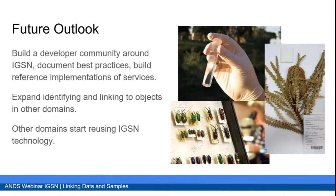What's happening next? At the symposium last week we saw we've already made good progress building a developer community around IGSN, but that needs to carry on further. We document best practices to show how it can be used and build reference implementations of services that others can test their services against. The next steps we are already taking is expanding to identifying and linking objects in other domains, not only in the geosciences. Ultimately, what we want to see is other domains start reusing the IGSN technology — perhaps not IGSN in the strict sense through the existing organization, but as we copied DataCite, other domains might copy IGSN as a technology and governance model for persistent identifiers in their specific domain.